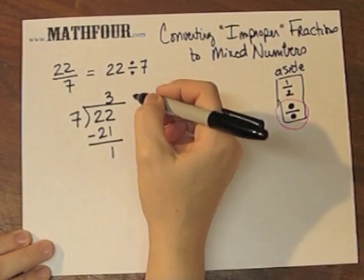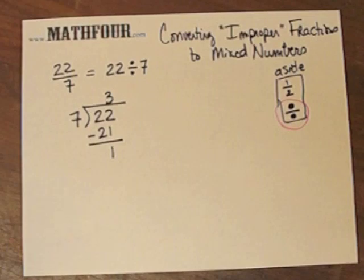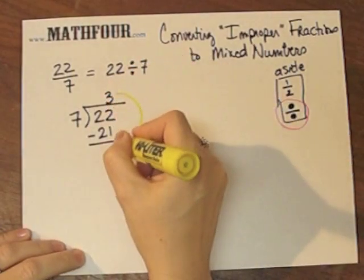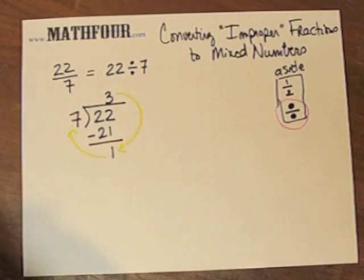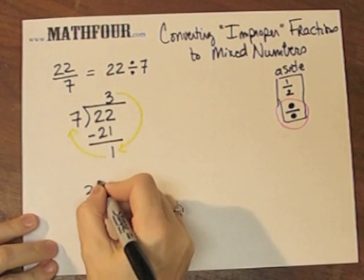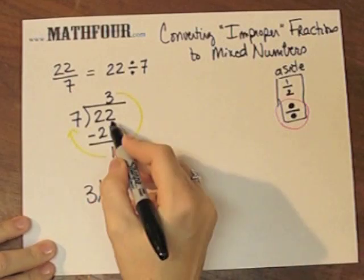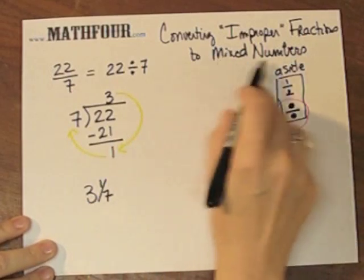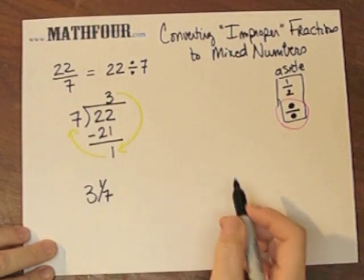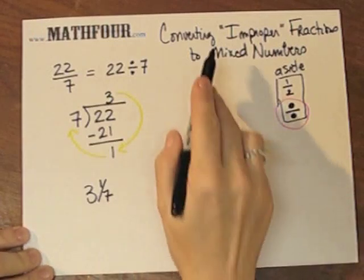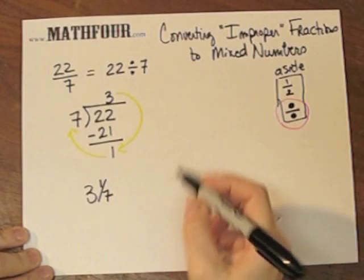So the way we read this is 3 and 1 seventh. So this is 3 and 1 over 7. Now if you want to continue with a decimal, but we're not talking about decimals in this particular example. So that's how to convert an improper fraction to a mixed number.